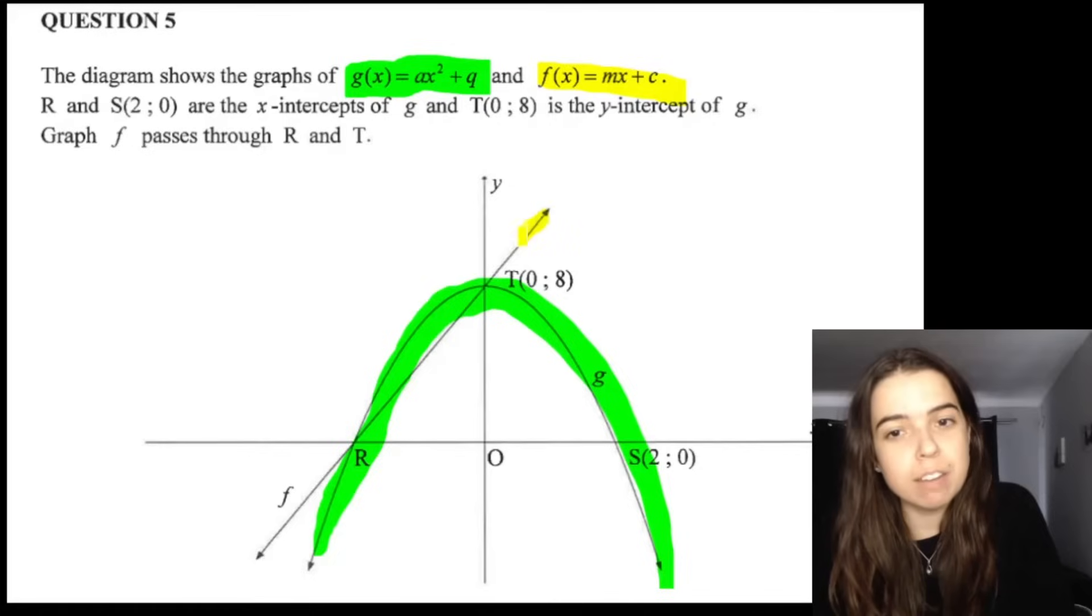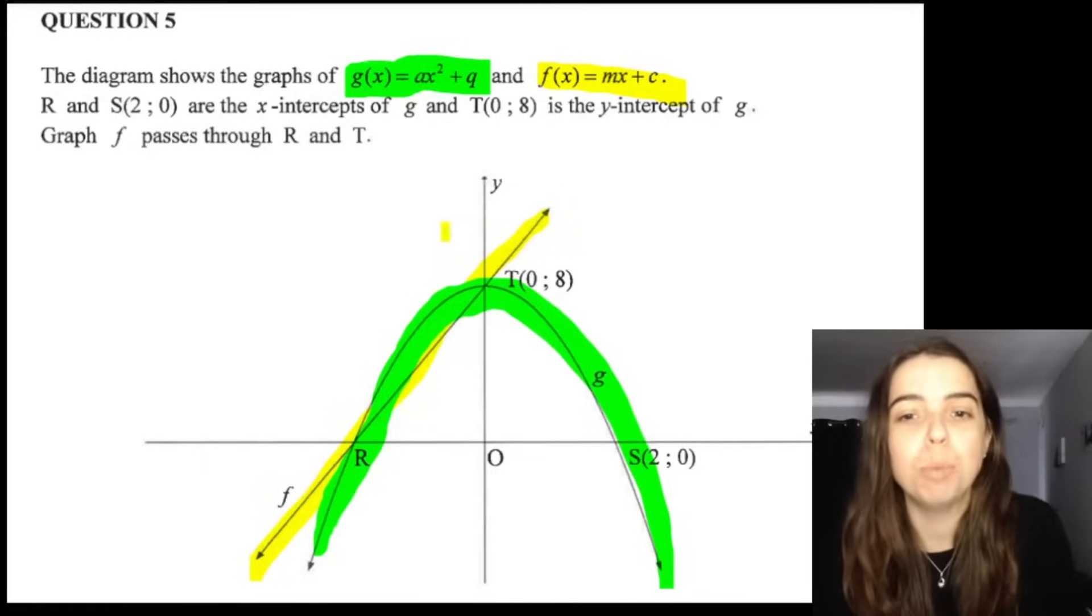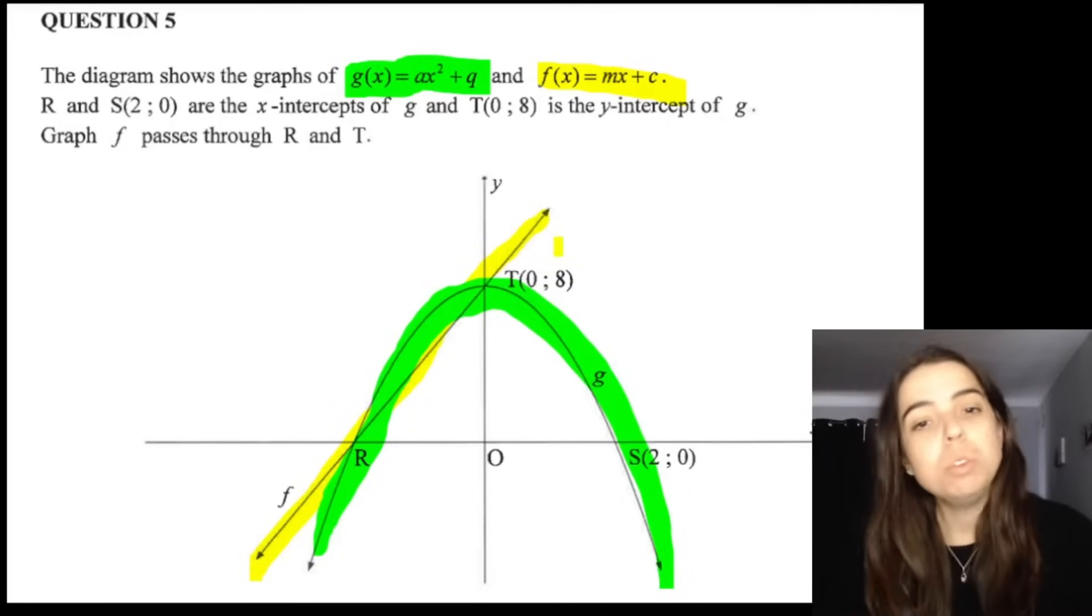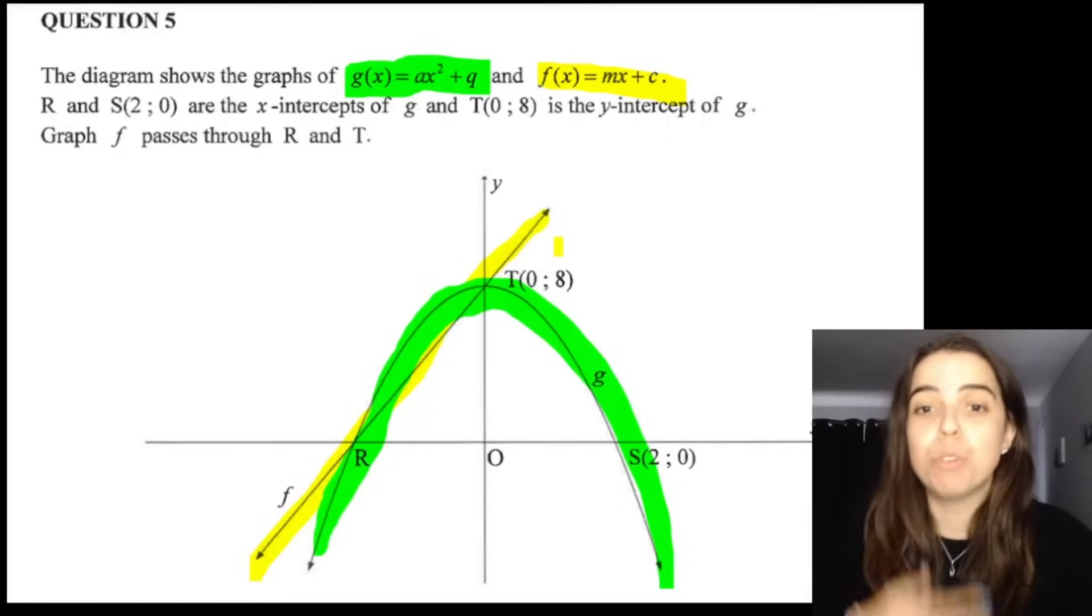That is the straight line function. We can see that these functions intersect, in other words they cut each other at two points, labeled r and labeled t. They also tell me that r and s are the x intercepts of g and t is the y intercept of g.